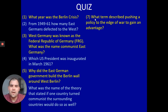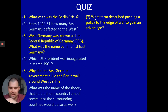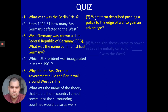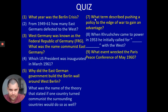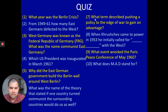Number seven: what term described pushing a policy to the edge of war to gain an advantage? It's the one we said is a bit like playing chicken. Number eight: when Khrushchev came to power in 1953, he initially called for something with the West — what was the expression he used? Number nine: what event wrecked the Paris Peace Conference of May 1960? And finally, number ten: what does MAD stand for? This is from when we looked at the arms race.